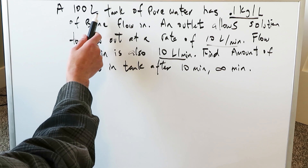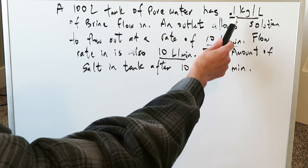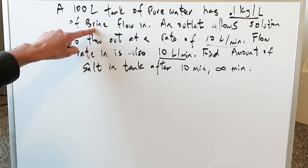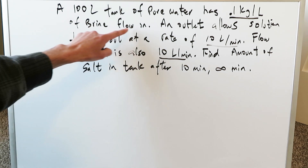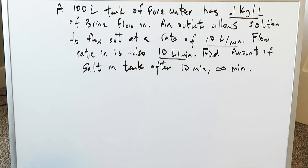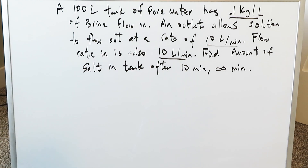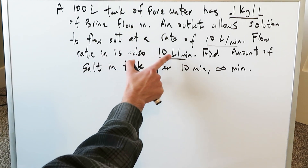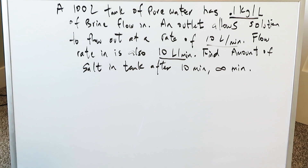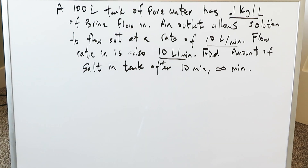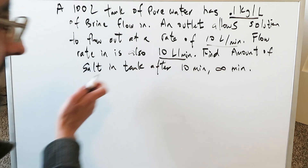The question is this. We have a 100 liter tank of pure water which has 0.1 kilograms per liter of brine solution of salt flowing in. We have an outlet from that tank which allows that mixed solution to flow out at a rate of 10 liters per minute. The amount flowing in is also 10 liters per minute. We have to find the amount of salt in the tank after 10 minutes and after infinity minutes.